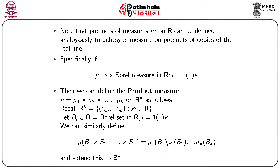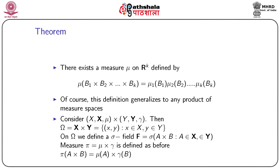We have a theorem that there exists a measure μ on Rk defined by μ(B1 × B2 × ... × Bk) = μ1(B1) · μ2(B2) · ... · μk(Bk). This definition generalizes to any product of measure spaces. Consider two measure spaces (X, script-X, μ) and (Y, script-Y, γ). We have two measures μ and γ. Then Ω = X × Y is the collection of all (x, y) where x ∈ X and y ∈ Y.